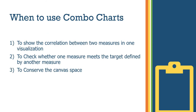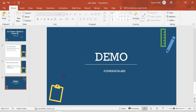So when do we use Combo Charts? We use them to show correlation between two measures in one visualization, to check whether one measure meets the target defined by another measure, and to save canvas space by combining what would otherwise be separate visuals.